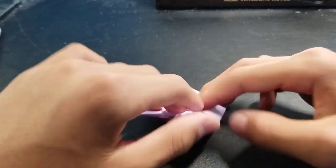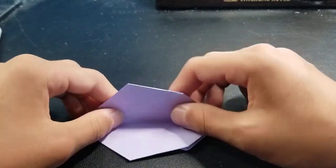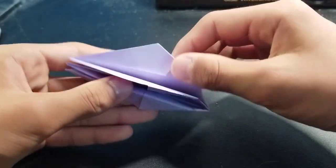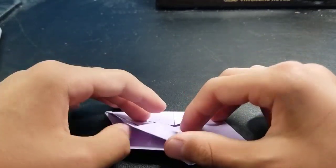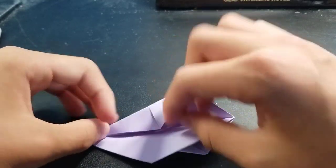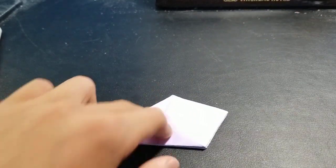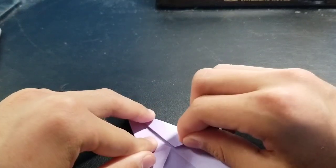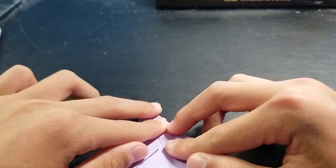So you want to fold this part up and fold it back, and fold this part back also and just flatten it out. Like this, and if you see that this edge isn't on the middle crease, you'll just fix it a little bit.